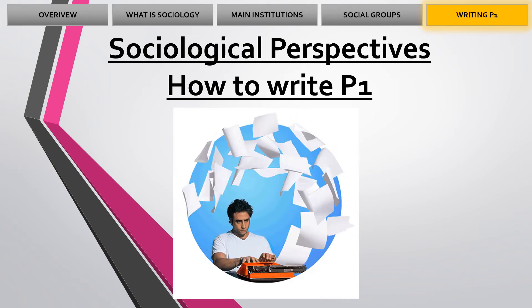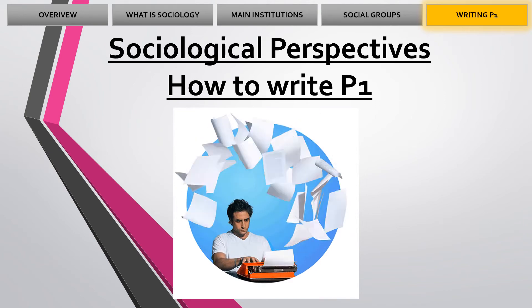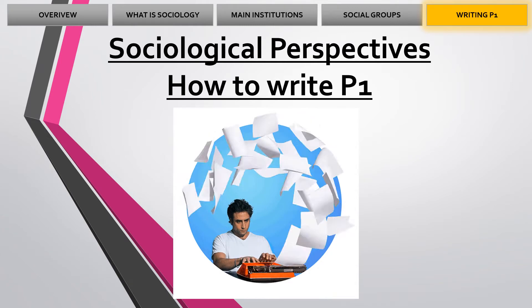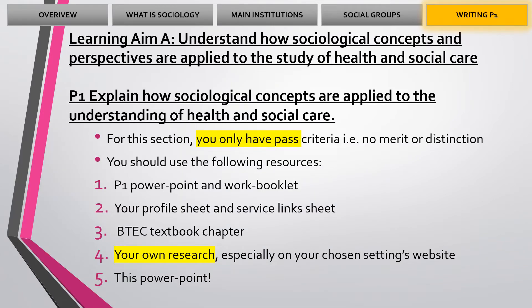Here we have an overview of how to write P1 for the sociological coursework. The learning name A highlights that we need to try and understand sociological concepts and perspectives and how they're applied to the study of health and social care.